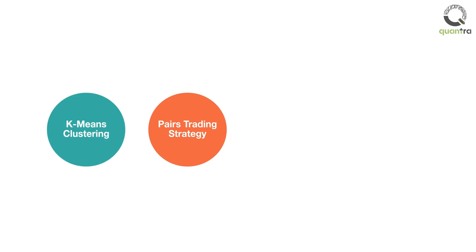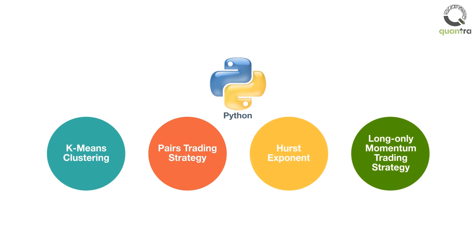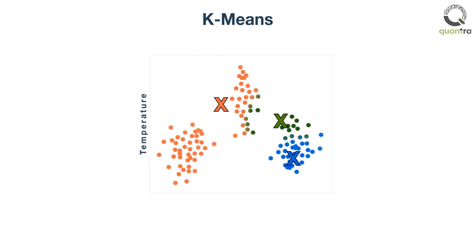This course covers the creation of four strategies in a step-by-step manner, and we will do this in Python. In the first section of the course, we will learn about an unsupervised learning algorithm called K-means.